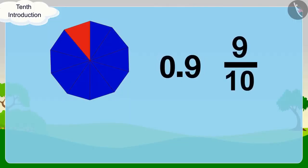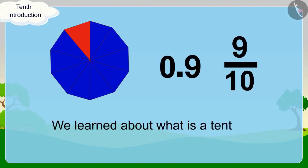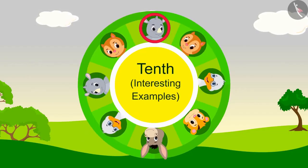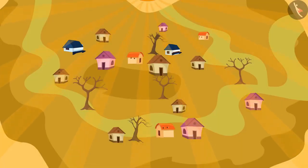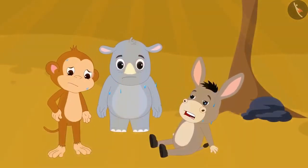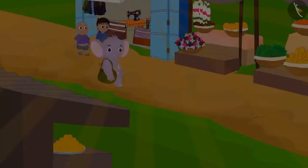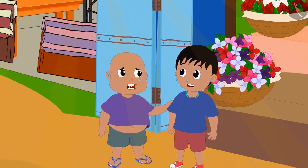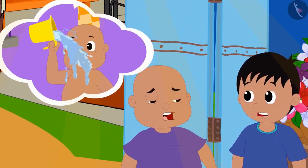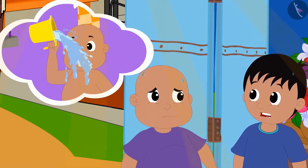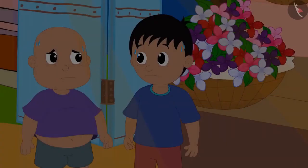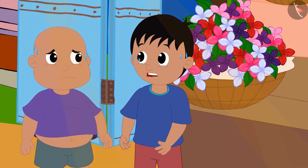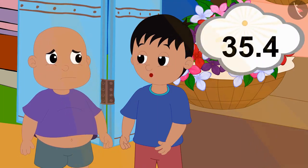In the previous video, we learned about what is a tenth. In this video, we will learn more about it through some interesting examples. It is very hot this time in Champapur. All the villagers are distressed due to the heat. Raju and Babalu are walking in the market. Babalu said: Raju, it is so hot nowadays. I have to take a bath twice a day. Raju replied: Yes, Babalu, I am also feeling very hot. This morning, I heard on the radio that today the temperature in Champapur is 35.4 degrees Celsius.